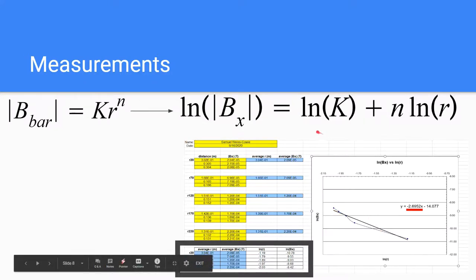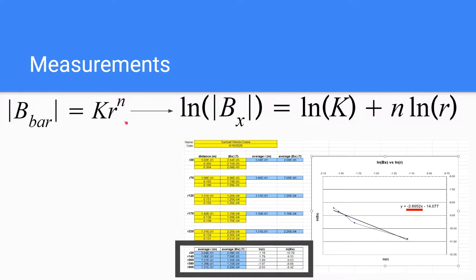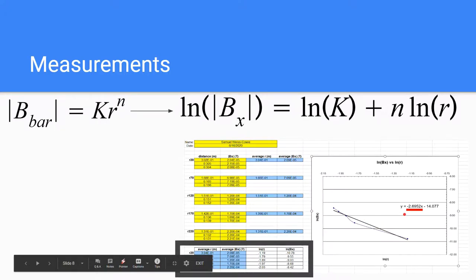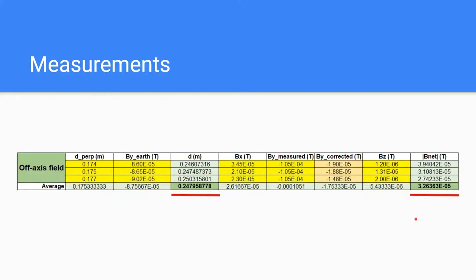You'll notice from the equation that our slope is n, which is the distance dependence shown here. So as you can see, our distance dependence calculated from our measurements is negative 2.6952. And here are values that will be used for our 45 degree angle implementation in the code.